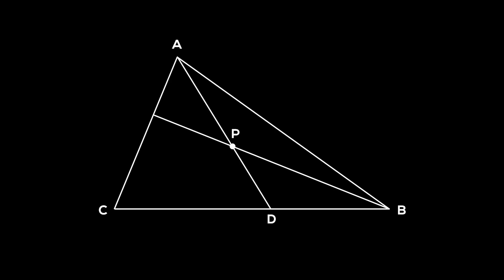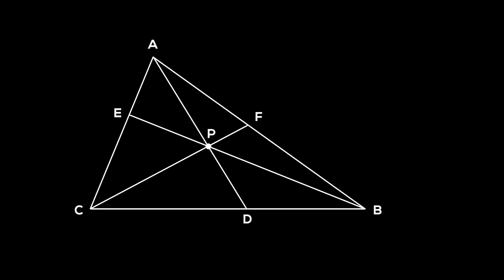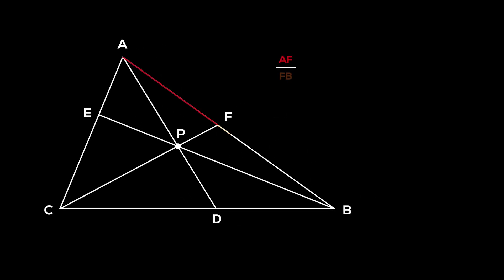Similarly, let BP intersect AC at E, and CP intersect AB at F. The theorem states that the product of AF over FB, BD over DC, and CE over EA is exactly equal to 1.